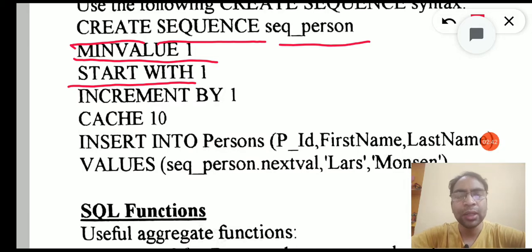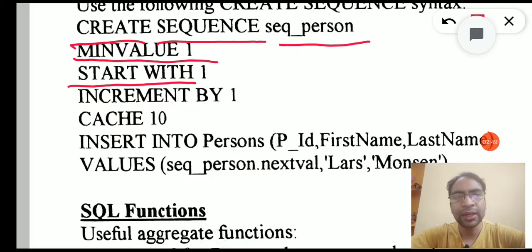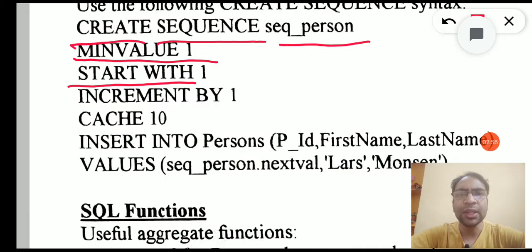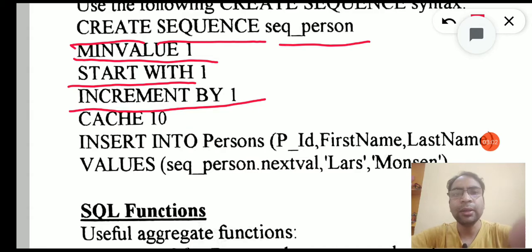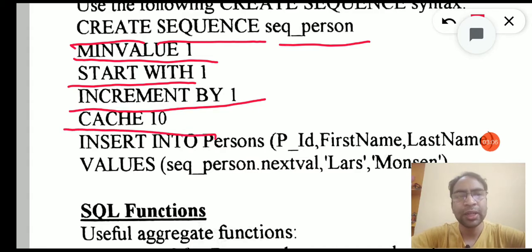If you want to increment by 1, then after 5 it will give you 6, after 6 it will give you 7. You can also increment by 10. So if the first value is 10, the next value will be 20, then 30, and so on. You can use this with the help of INCREMENT BY. Then CACHE 10 means 10 auto-generated values are automatically created and cached.